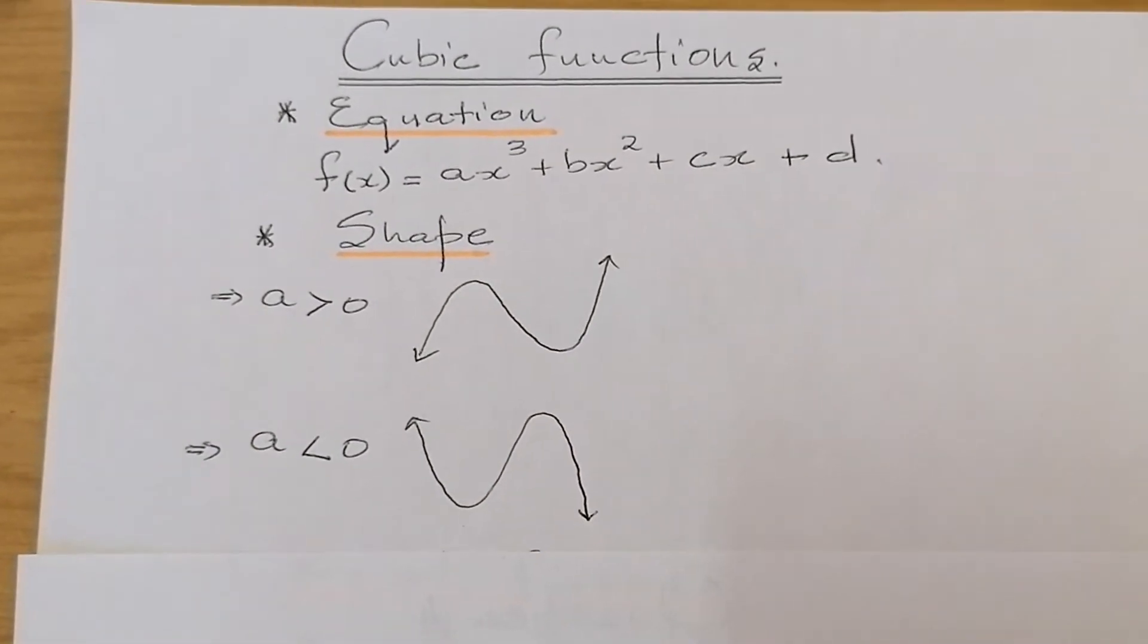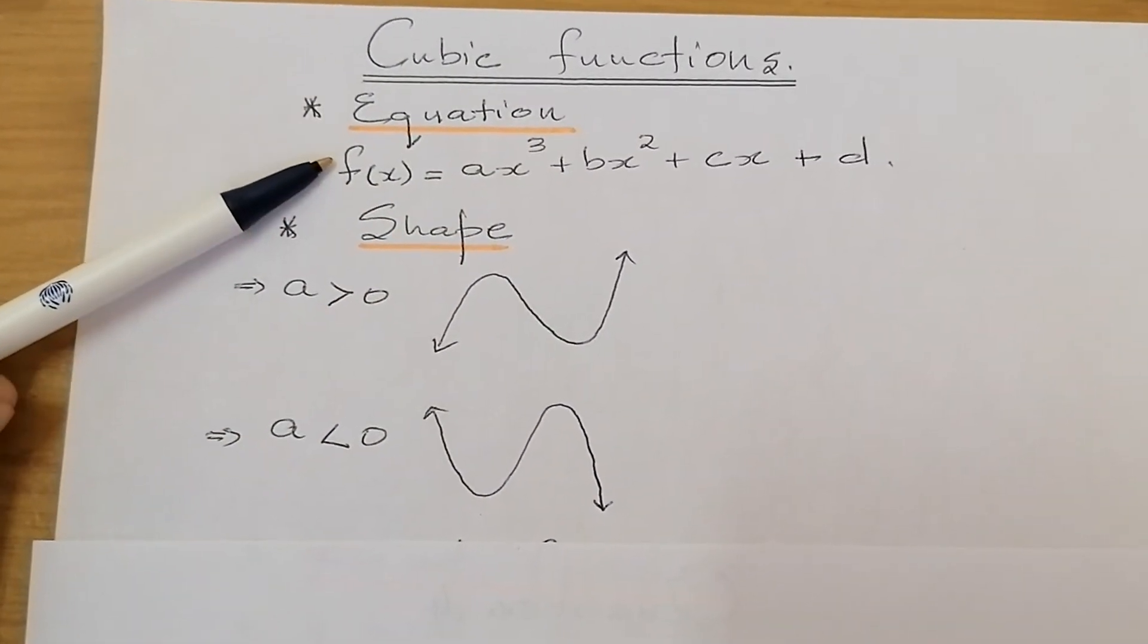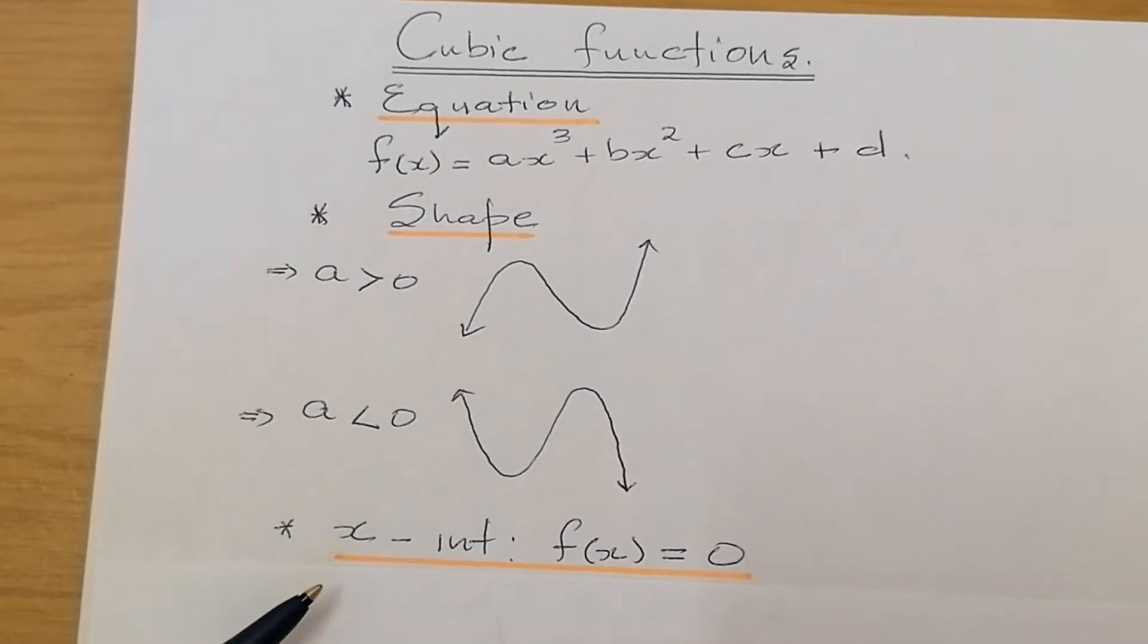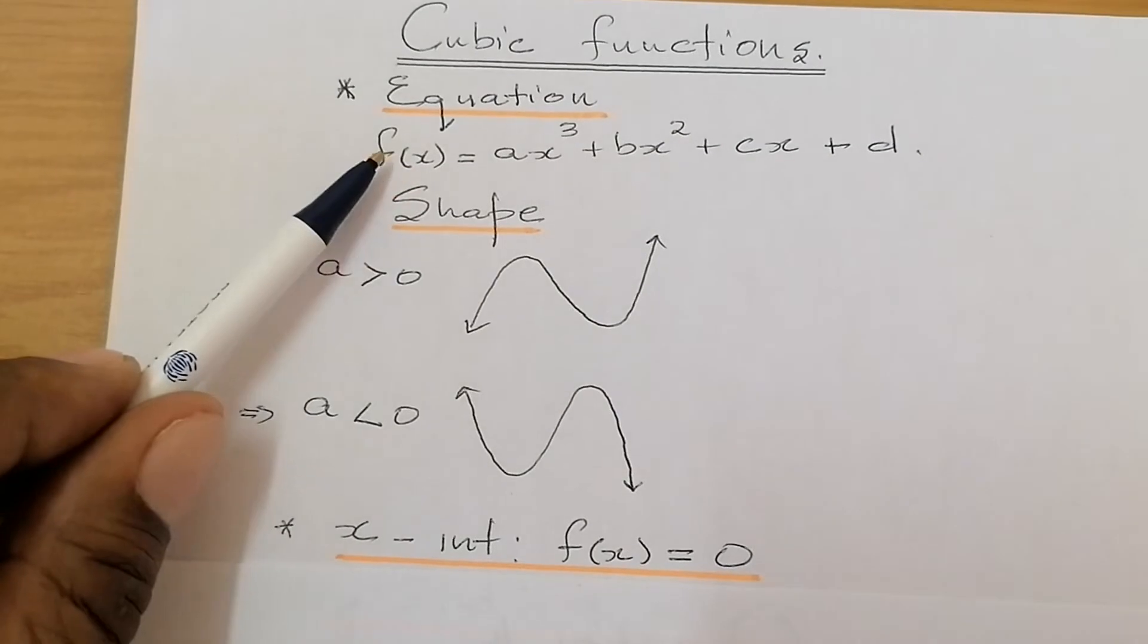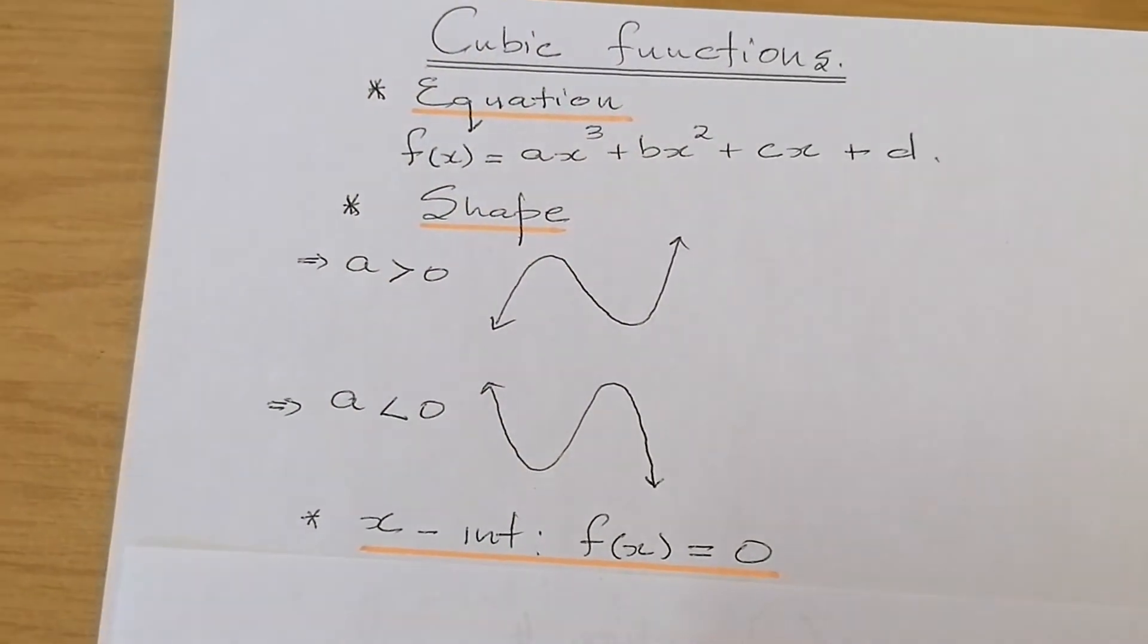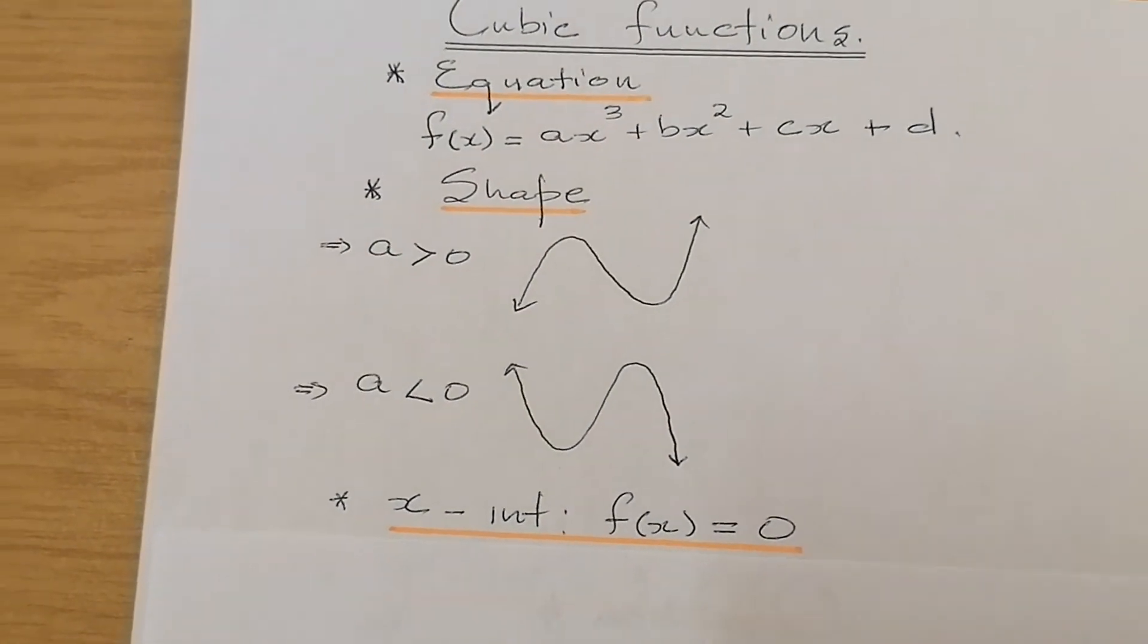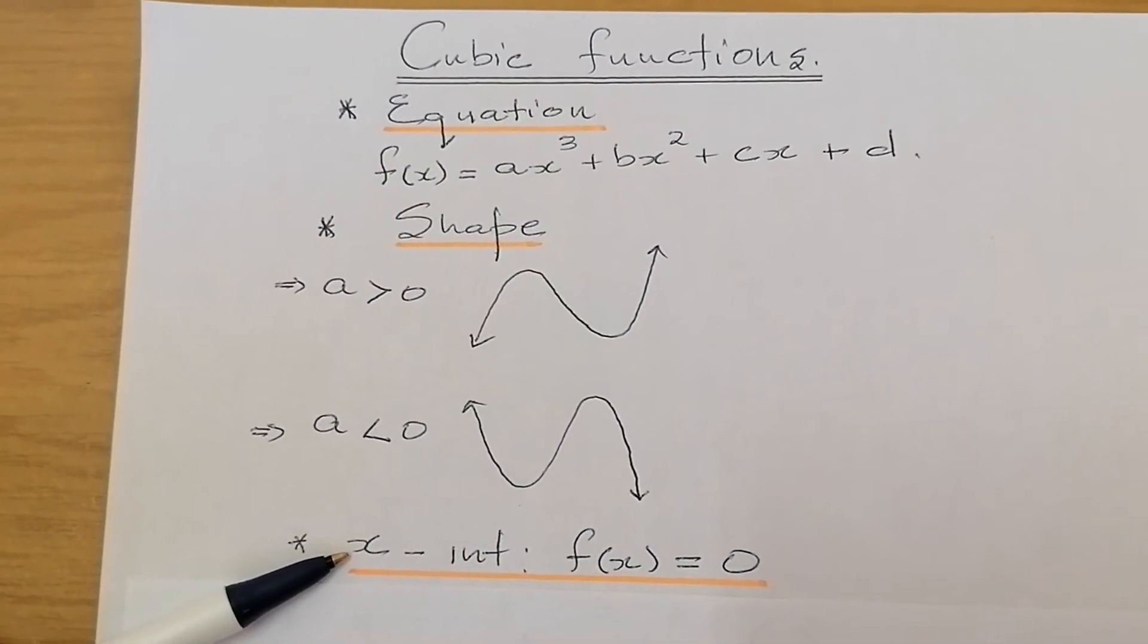From there, what else do we want to know? We want to know where this graph will cut the x-axis. That is what we refer to as x-intercepts. Now, for x-intercepts, the value of y must be equal to zero, meaning that f(x) must be equal to zero. Then we fully factorize this using the factor theorem, your factor theorem and inspection or long division method, which is referred to as algorithm method.